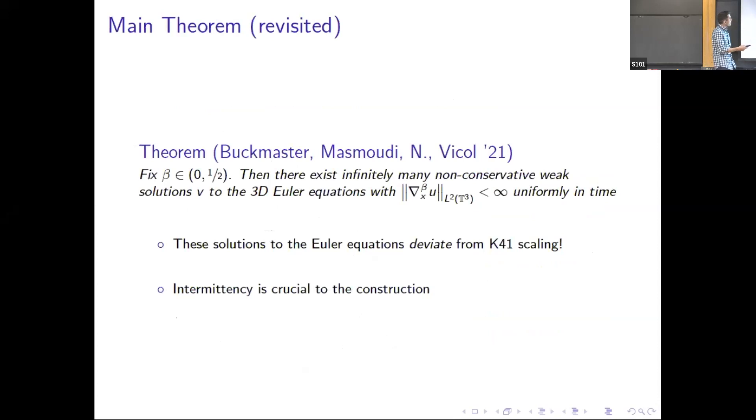Revisiting our theorem, what it's really about is demonstrating that there exists a wide class of solutions to the Euler equations which exhibit that particular deviation from Kolmogorov's scaling. This was the first construction of such solutions that had this kind of scaling uniformly in time.